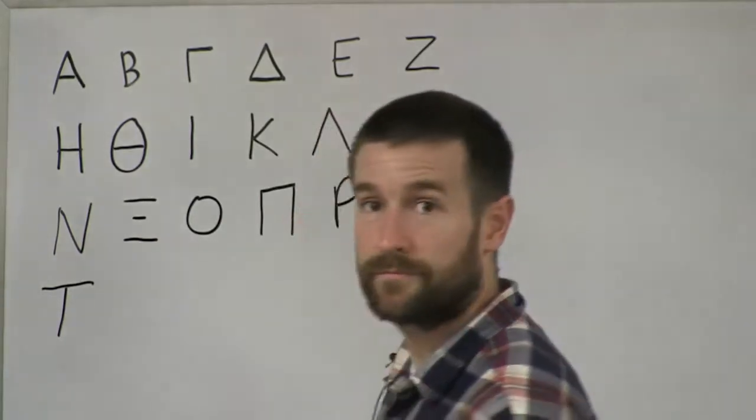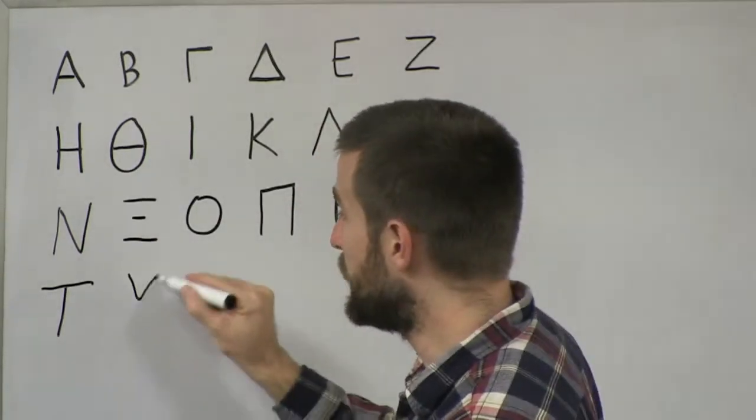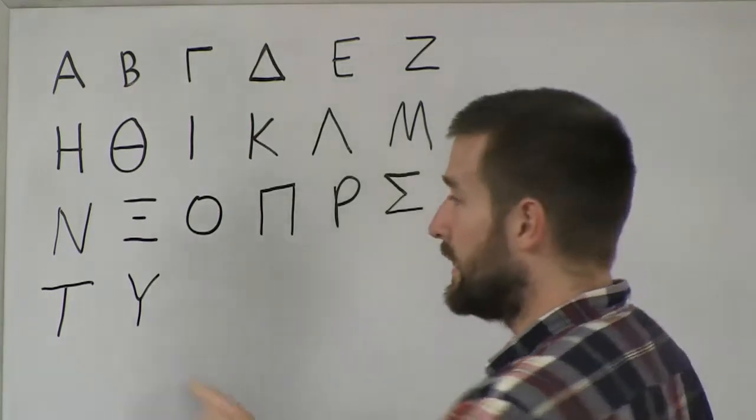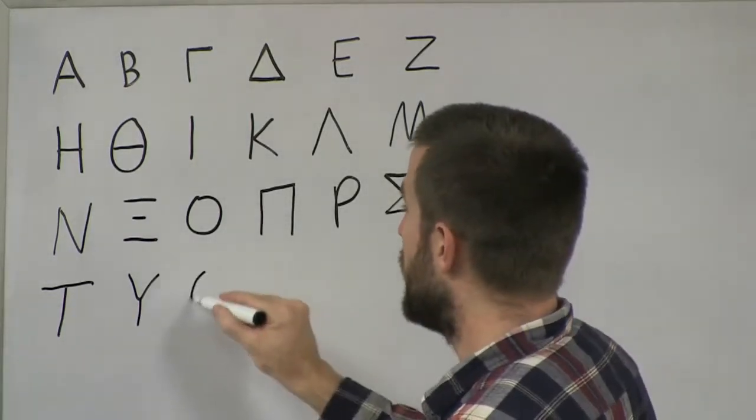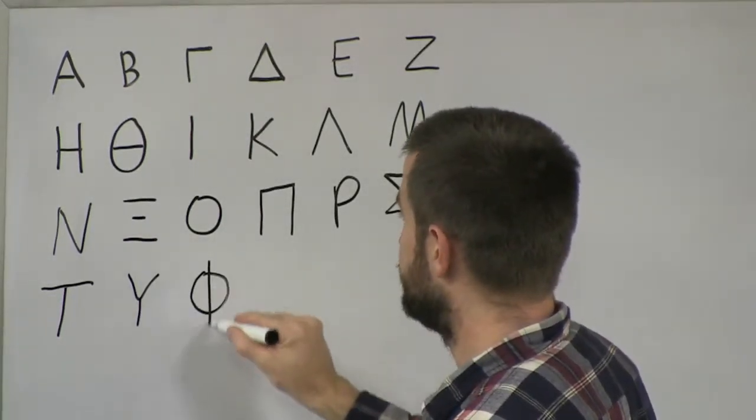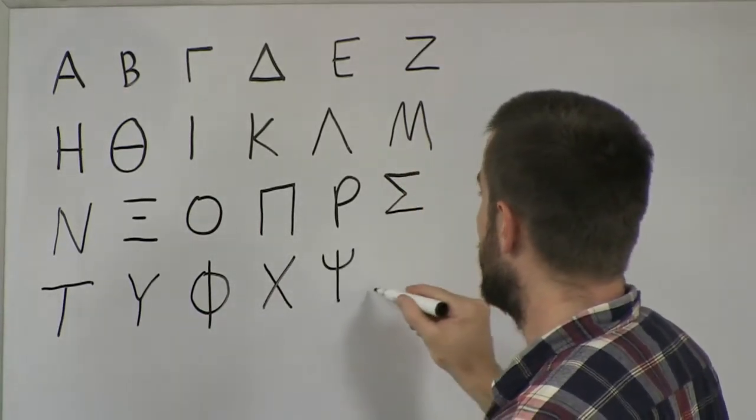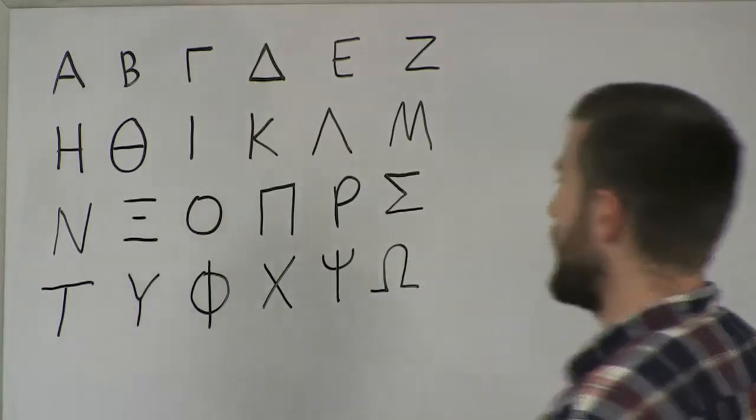Tau. Upsilon. So the Upsilon looks like the English capital Y. Upsilon. Phi. Chi. Psi. And Omega.